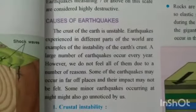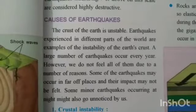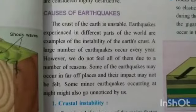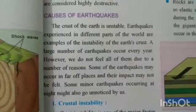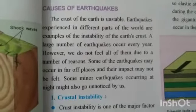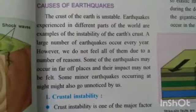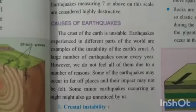The crust of the earth is not stable, and earthquakes experienced in different parts of the world are examples of this instability. A large number of earthquakes occur every year, however we do not feel all of them. Some may occur in far-off places where the impact is not felt, and some minor earthquakes occurring at night might go unnoticed.